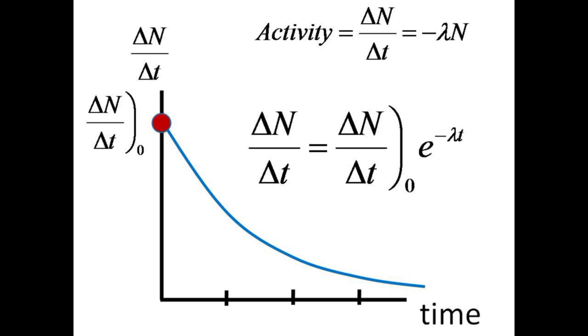Since the activity, or count rate, is proportional to N, the activity decreases with the same exponential decay curve and having the same decay constant.